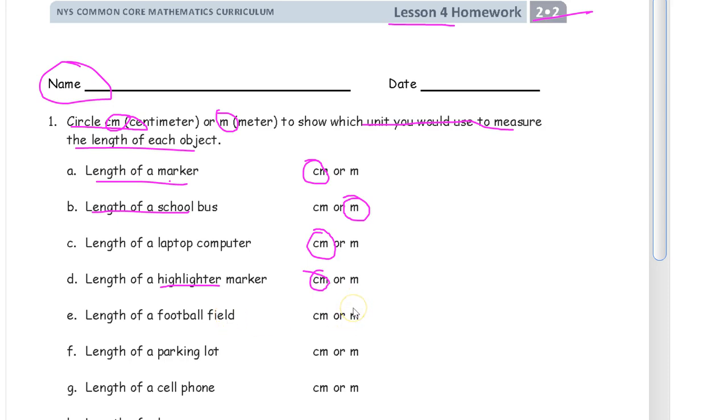Length of a football field. Football fields usually are measured in yards, but that's another module. This is meters. A much more appropriate unit of measurement for a football field. Anything outdoors like that. A parking lot. That's another big outdoor area. Meters.